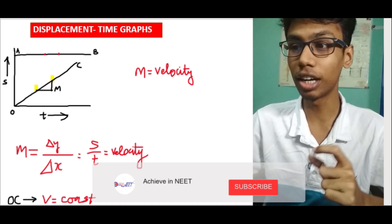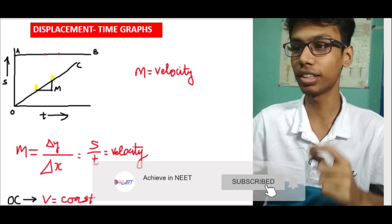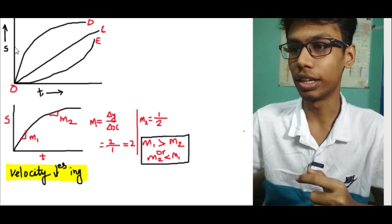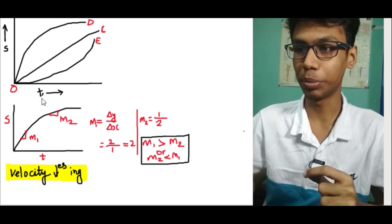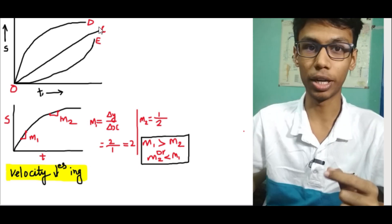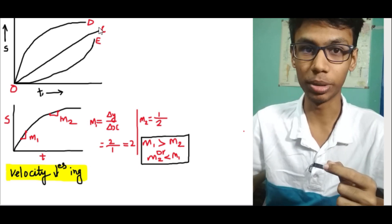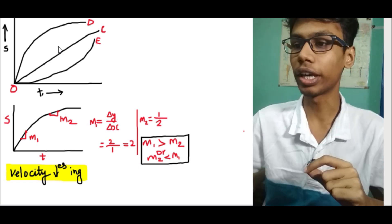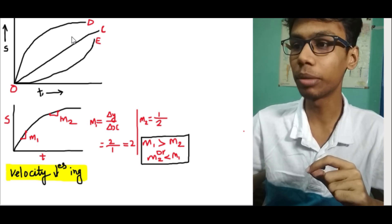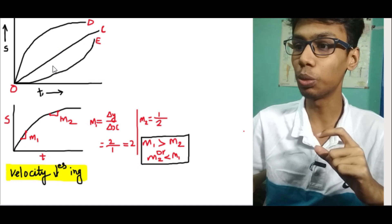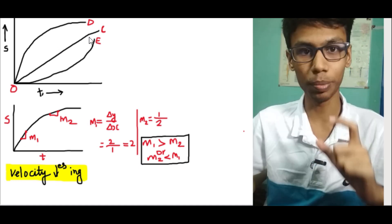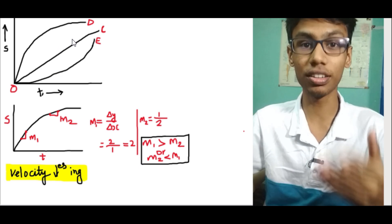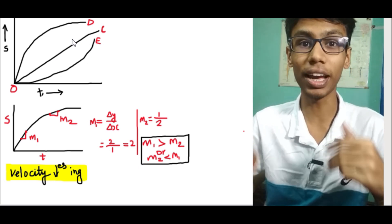Now we can see the curves and displacement-time graph in this video. This is our displacement-time graph and we can see the straight line. In a displacement-time graph, velocity is always constant. This is a parabolic curve — OE is a parabolic curve with the same slope, same velocity, and same acceleration.